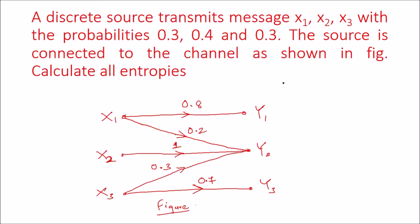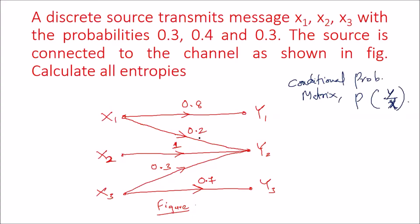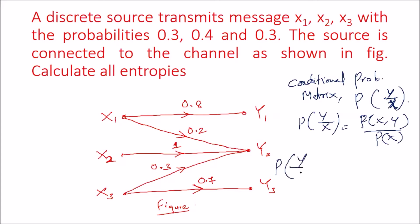From the given data, we can write the conditional probability matrix. Just by looking at the figure, we have the conditional probability matrix P(Y|X). We know that P(Y|X) is written as P(XY) divided by P(X). Even without using this formula, we can directly write the P(Y|X) matrix just by looking at the links in the figure.